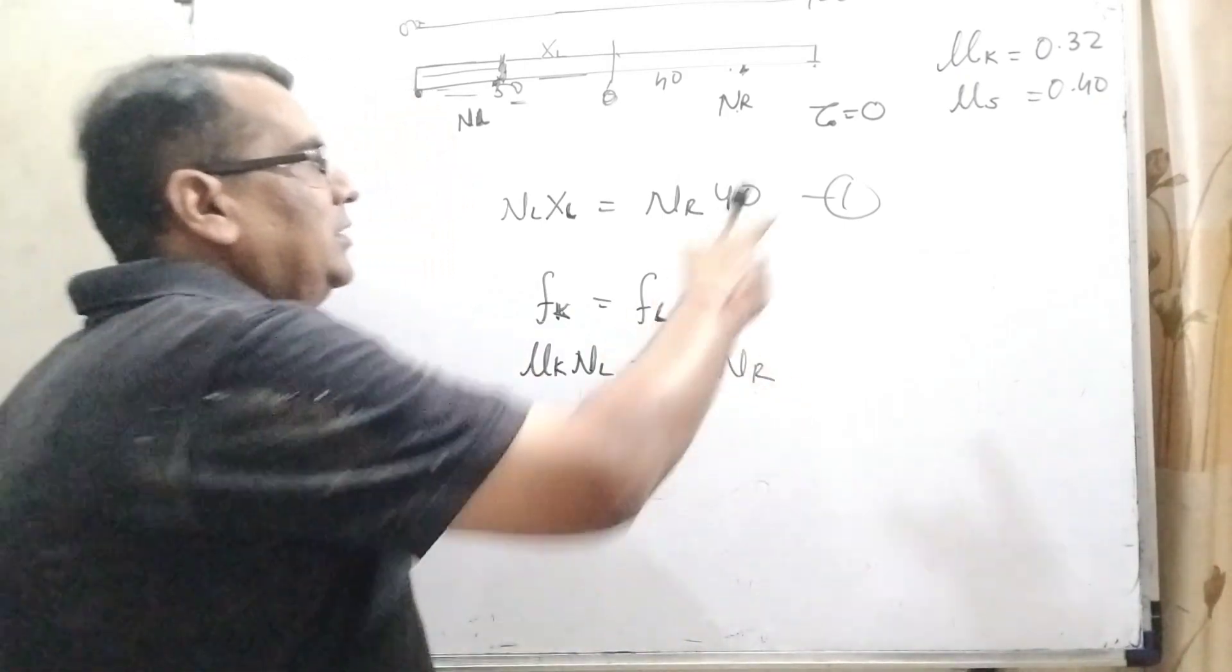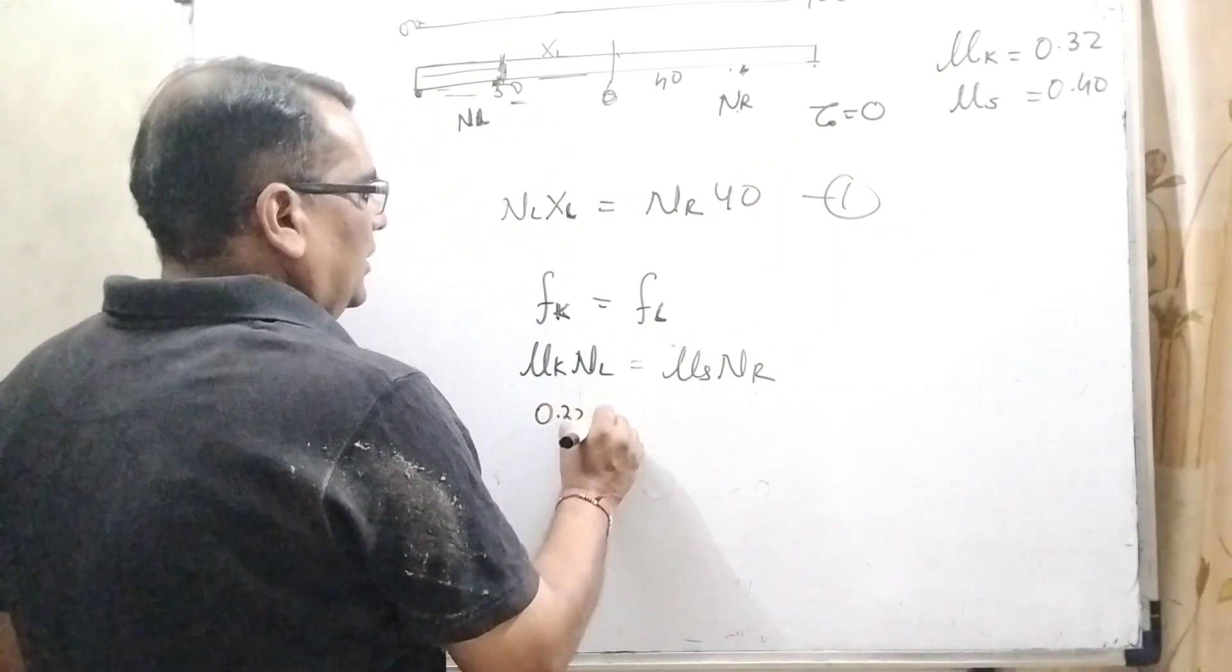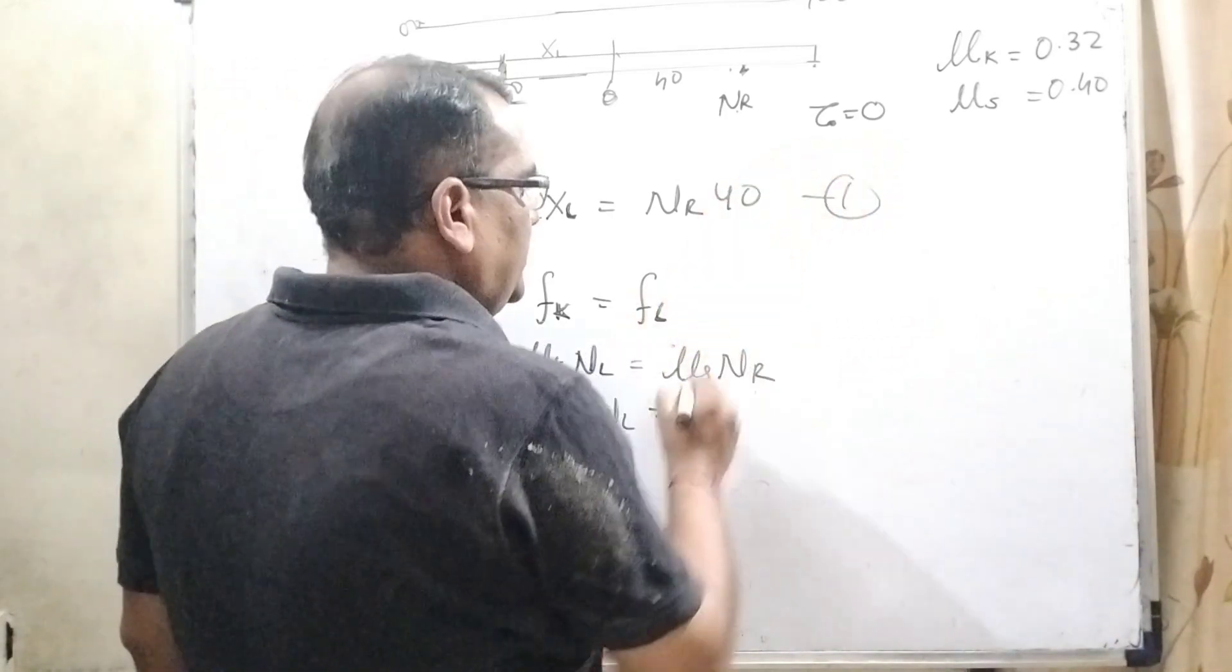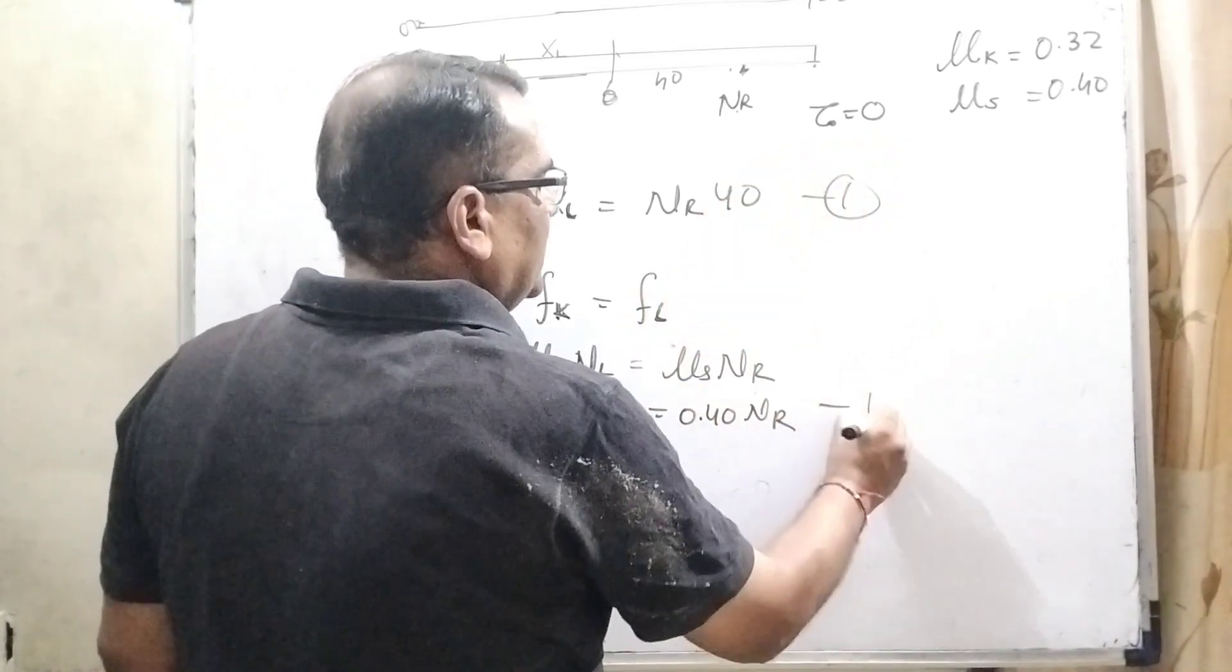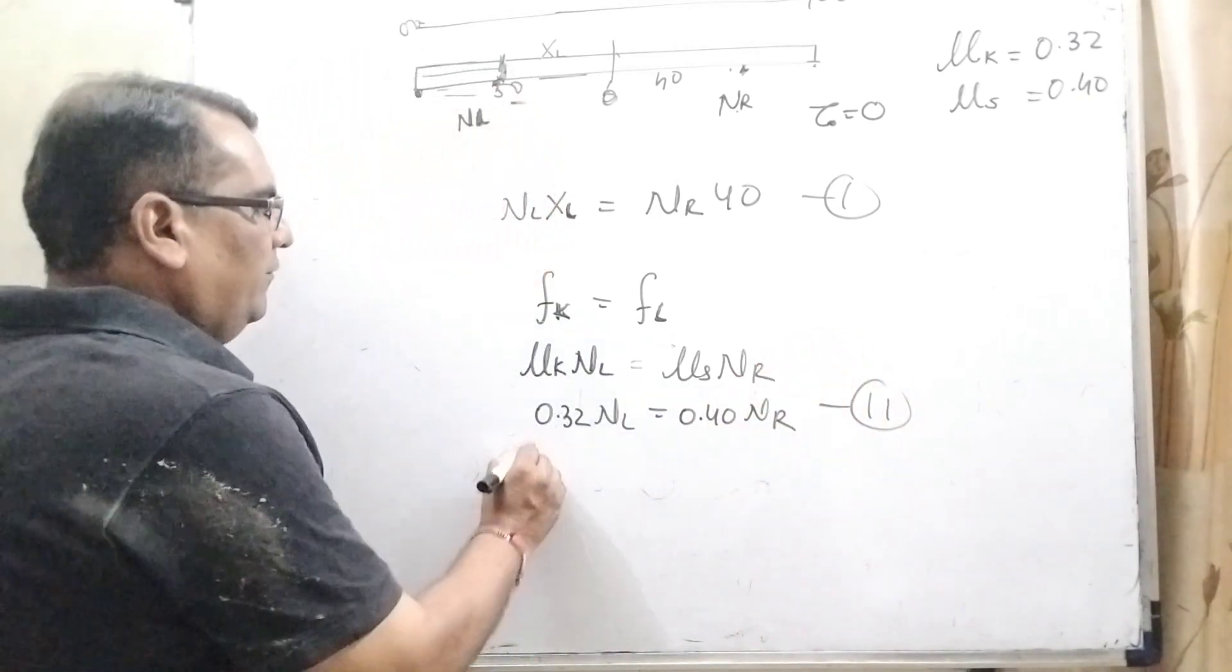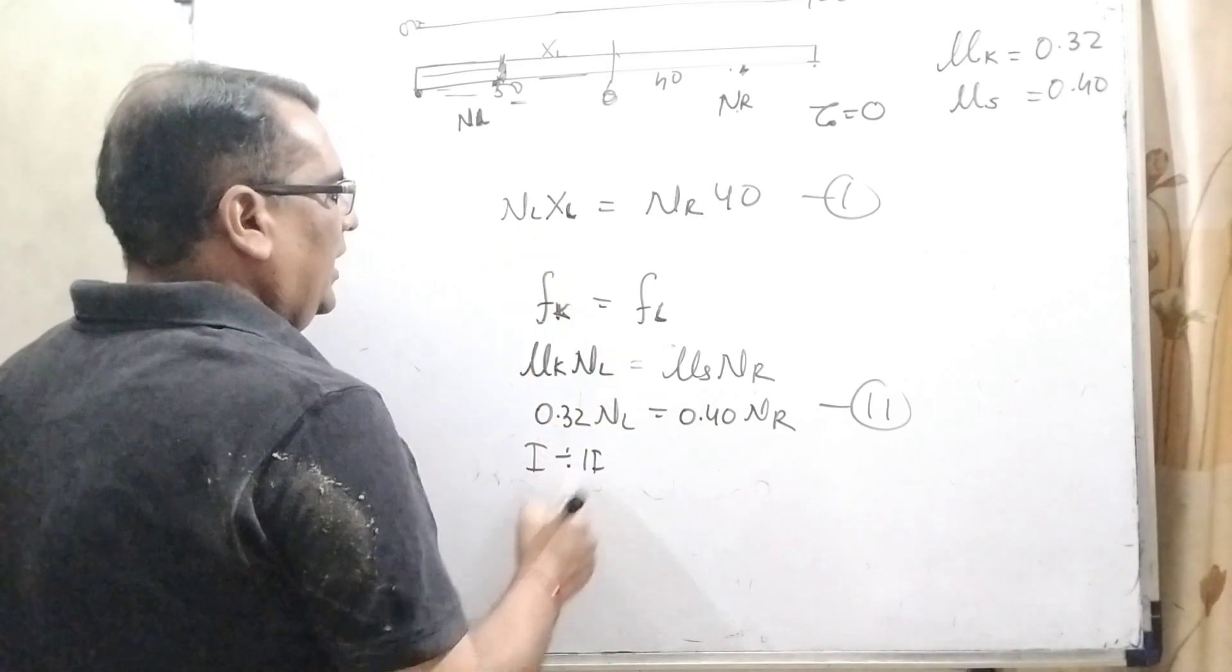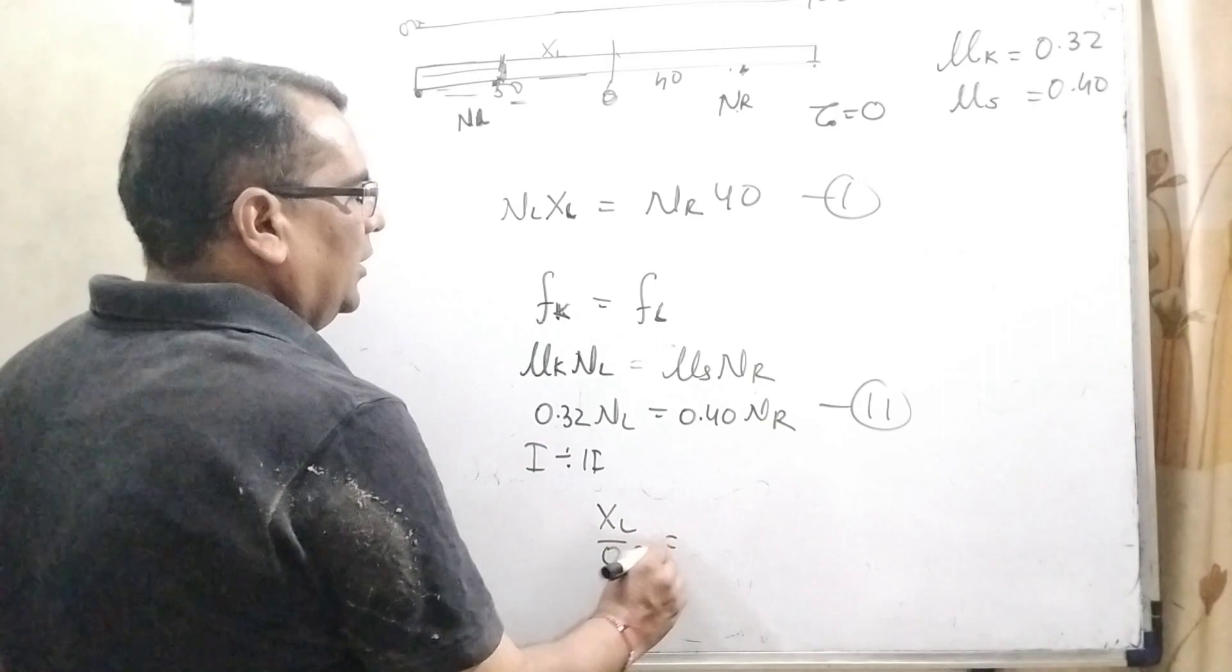Here μK is given as 0.32 × NL, and it is the second condition.